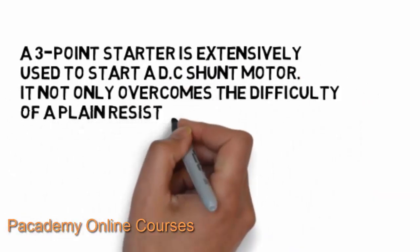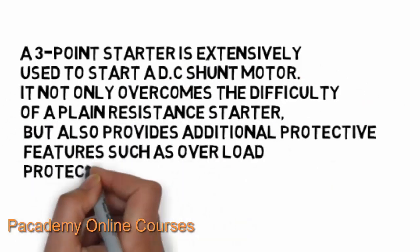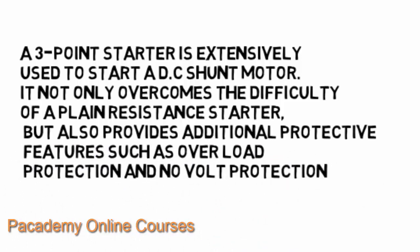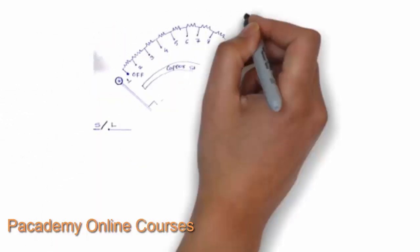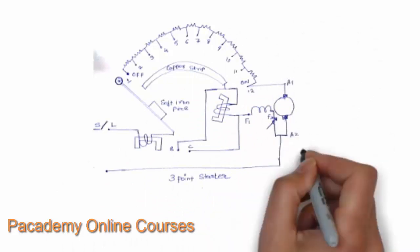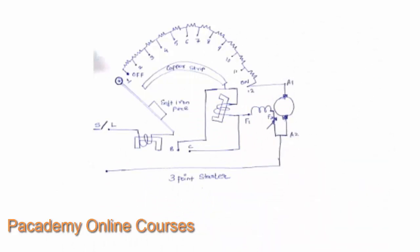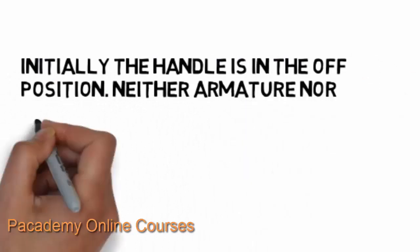This disadvantage can be overcome by a three-point starter, which is extensively used to start DC motors. It not only overcomes the difficulty of a plain resistance starter but also provides additional protective features such as overload protection and no-volt protection — that is, protection when the voltage is removed. In this type of starter, when the supply is disconnected, the starting resistance is also automatically reset, and to start the motor again the starting procedure must be repeated.